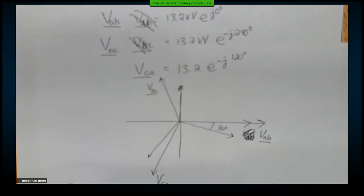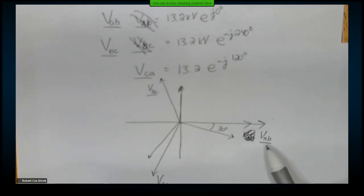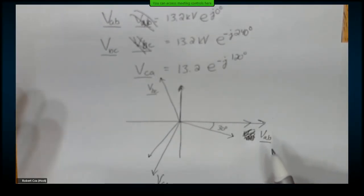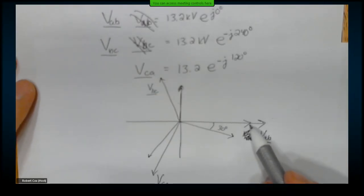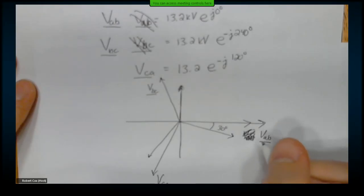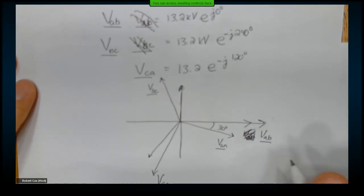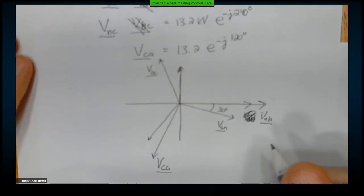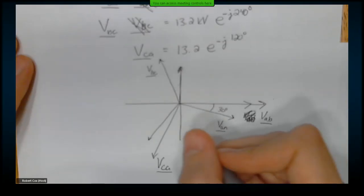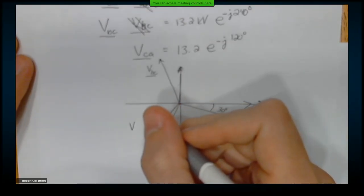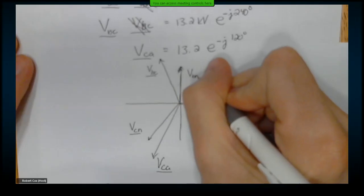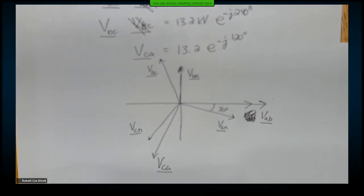So my line-to-neutral voltage is 30 degrees behind the line-to-line voltage, lagging by 30 degrees. So which one is this? If this is VAB, that would make this VAN. That will make this VCN and make this VBN.